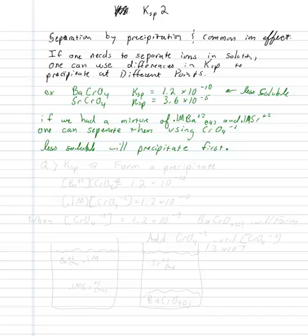What we can do here is, we know that when our Q value is greater than our KSP, we'll form a precipitate. We know our KSP is 1.2 times 10 to the negative 10. And we know our concentration of barium, that's equal to Ba plus 2 times CrO4 negative 2.